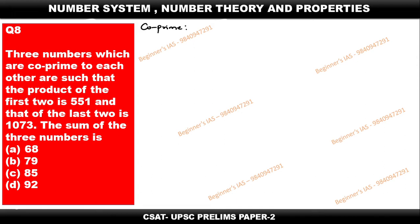Obviously, HCF between co-prime numbers is 1. Let me assume X, Y, Z as the three numbers which are co-prime. It is given that the product of the first two is 551 and the product of the last two is 1073. Obviously, the middle number Y is common to both.